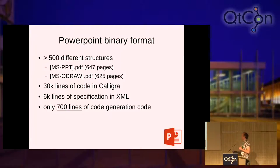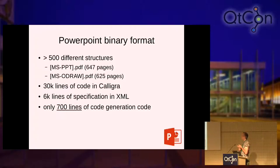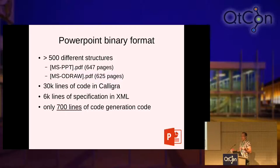The PowerPoint binary format example involves lots of different structures. When we were done generating, we had 30,000 lines of code in Calligra just to read the PowerPoint files, and these were generated from 6,000 lines of specification in XML. Even that specification can have bugs, but at least it's fairly readable when debugging. And here's the key: the code to generate those 30,000 lines is only 700 lines of code. So there's only 700 lines which determine how the file is actually being read.